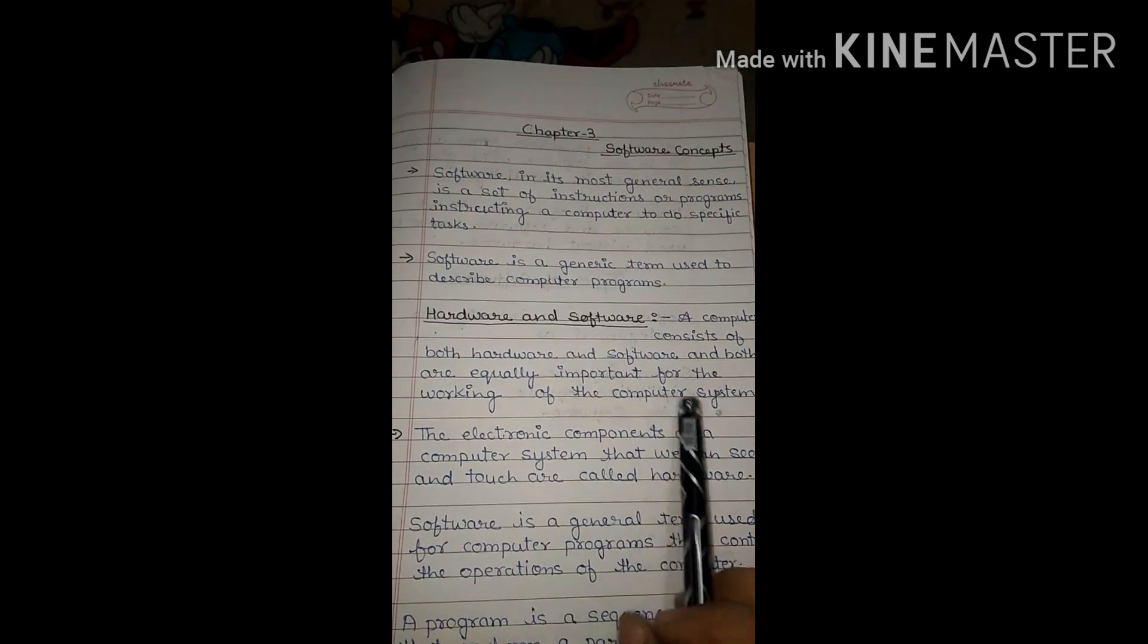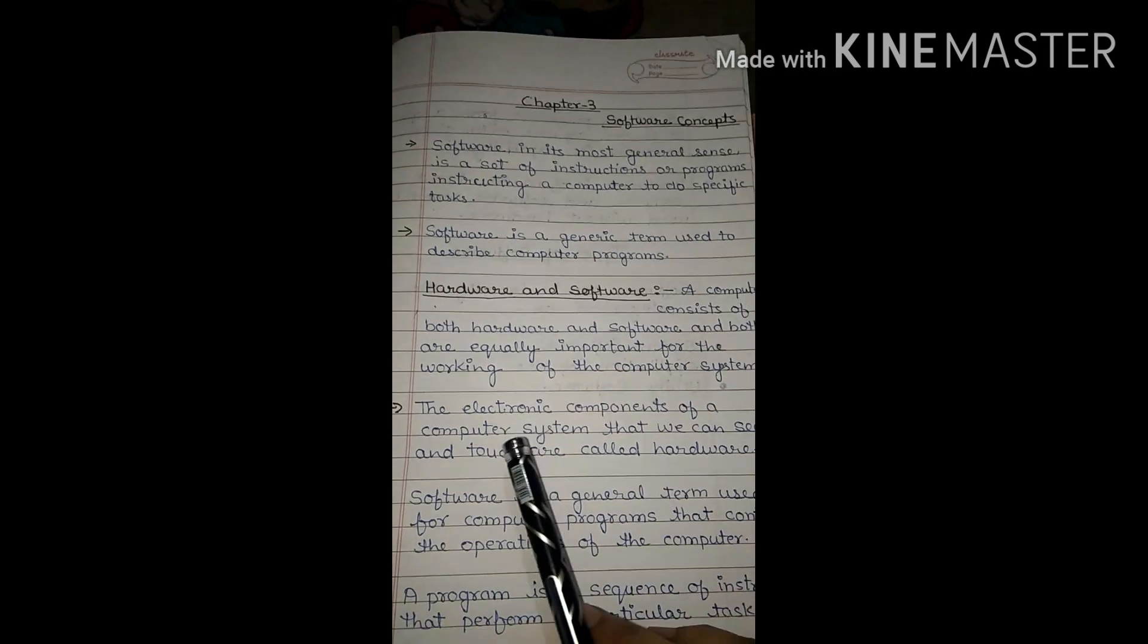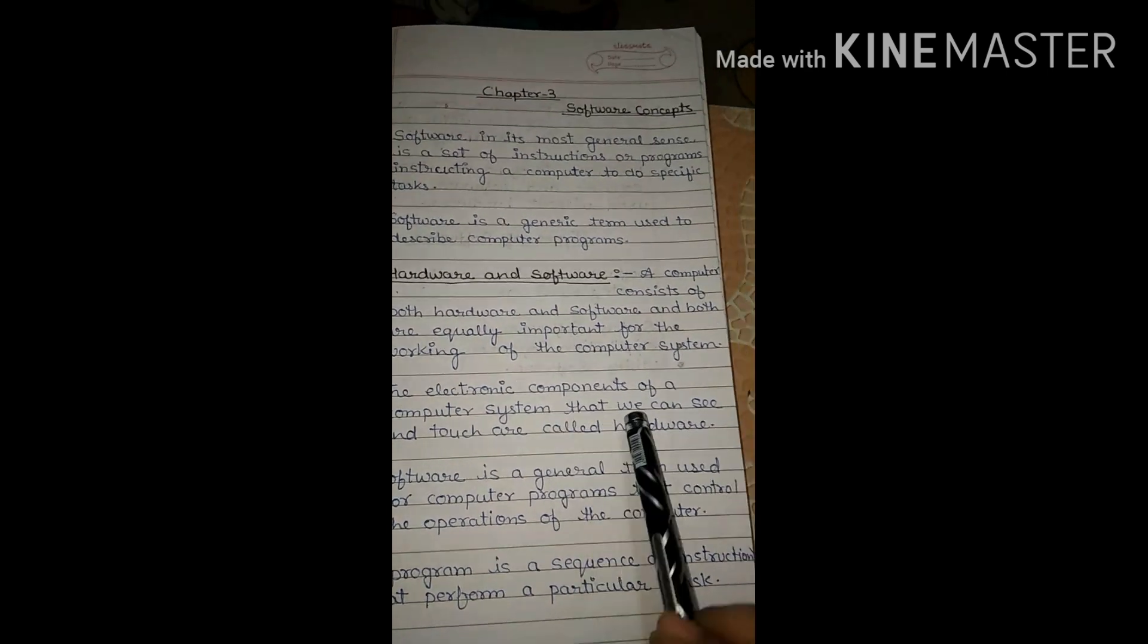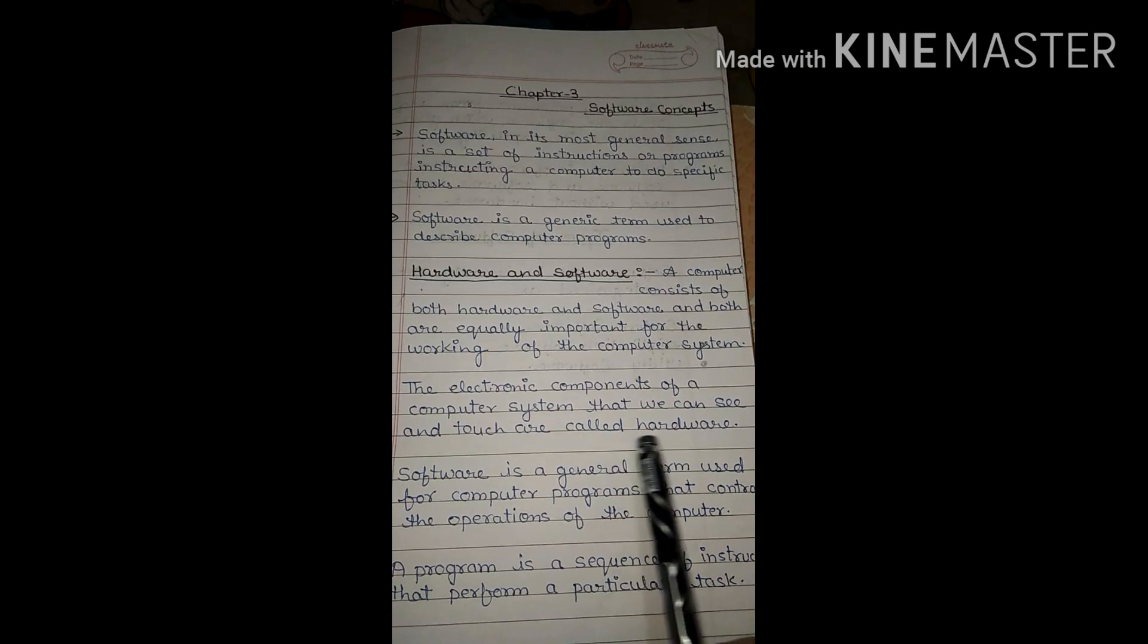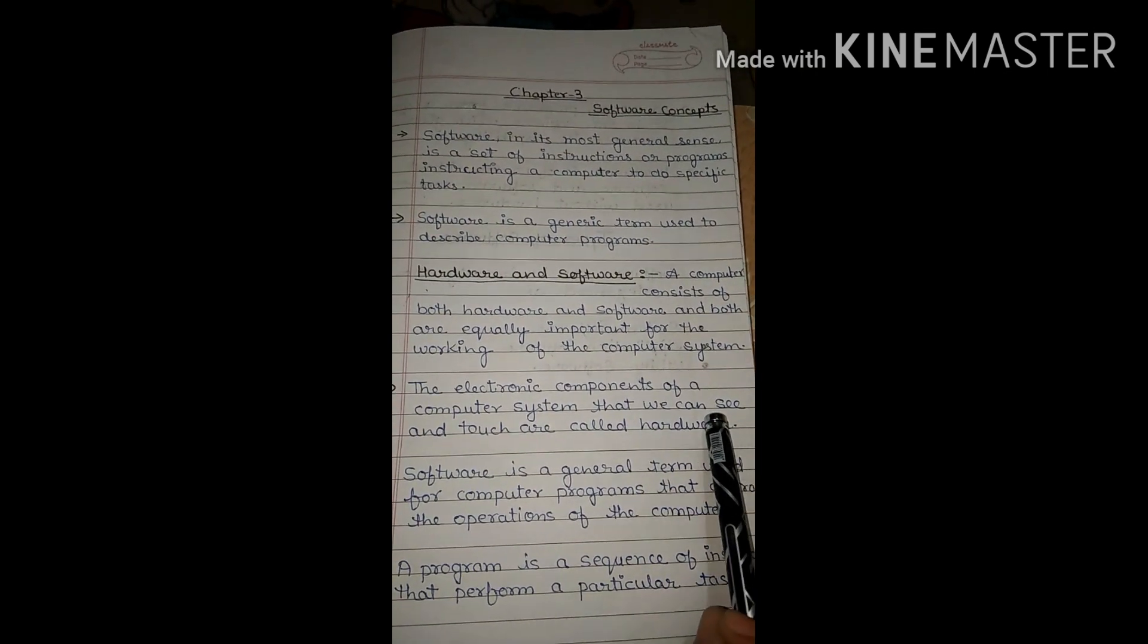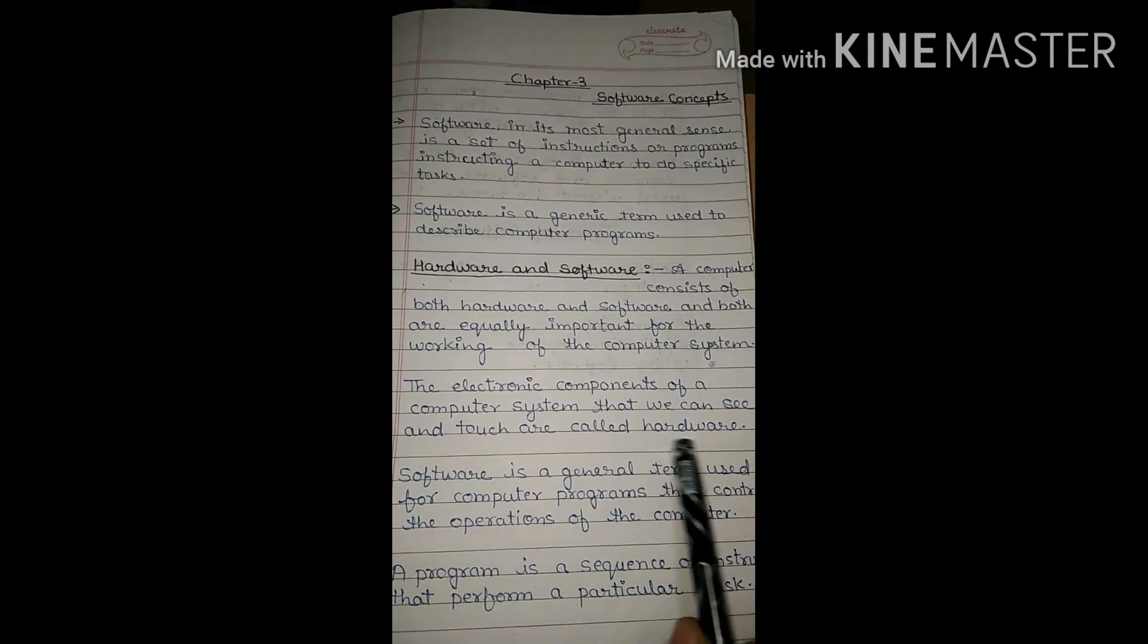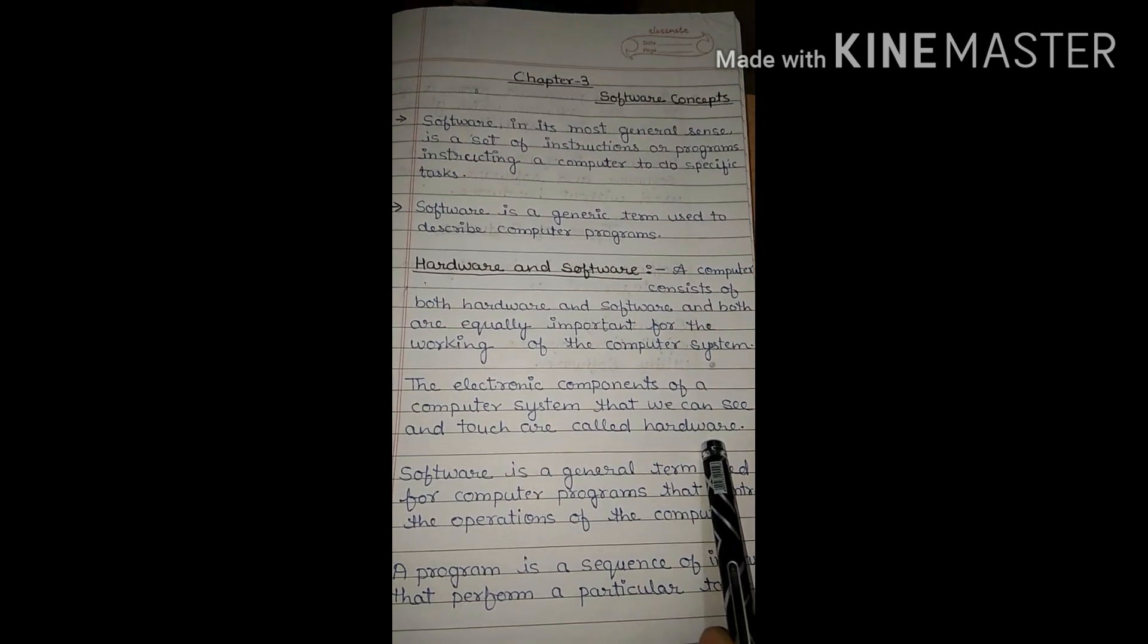If either one is not there, then the work will not happen properly. The electronic components of a computer system that we can see and we can touch are called hardware. What we can see and touch, this is called hardware.